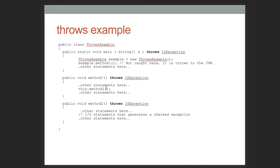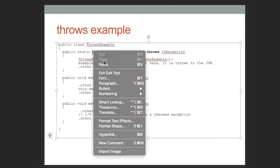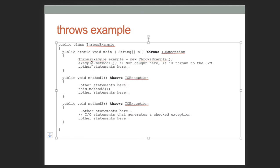Here's a throws example. We have main that throws IOException, method one that throws IOException, and method two that throws IOException. Main calls method one, method one calls method two. Method two generates a checked IOException and throws it to method one. Method one doesn't handle it, so it throws it to main. Main doesn't handle it either, so it passes it on to the JVM.